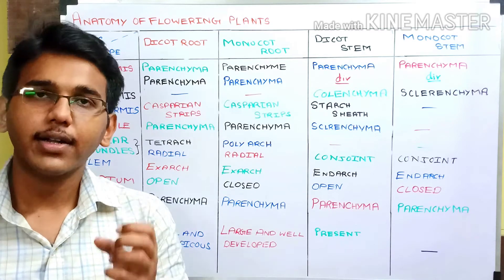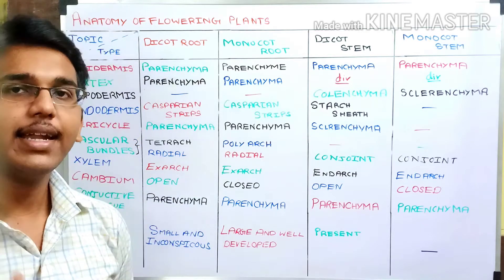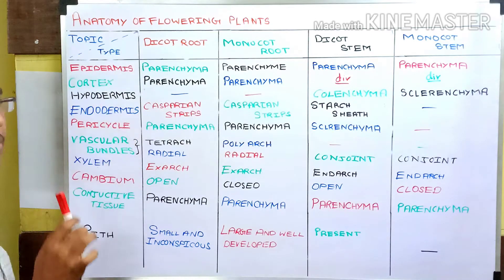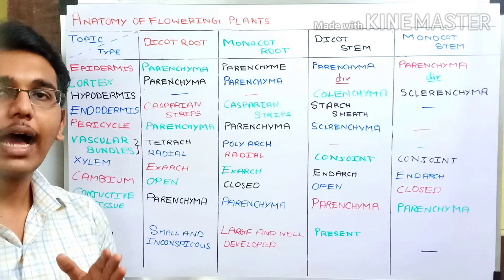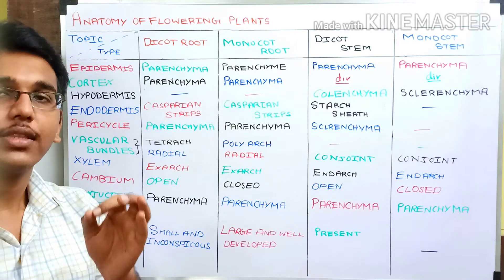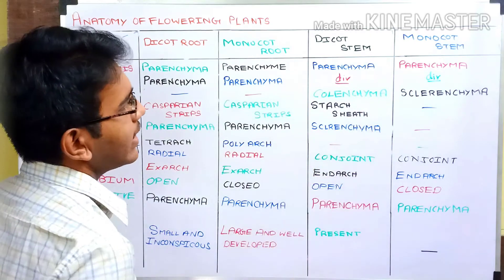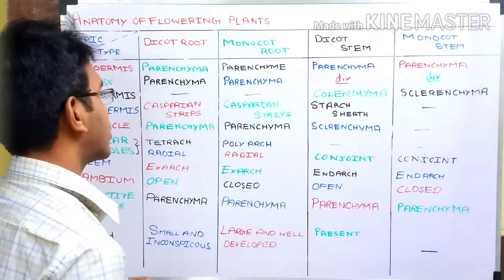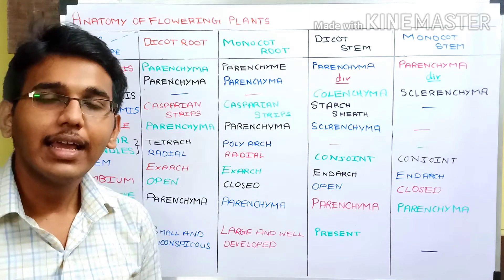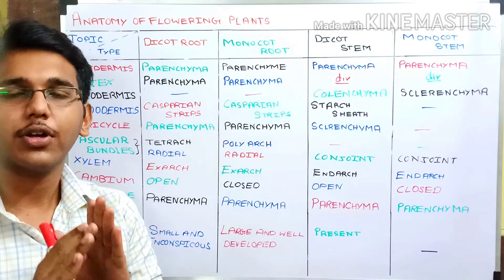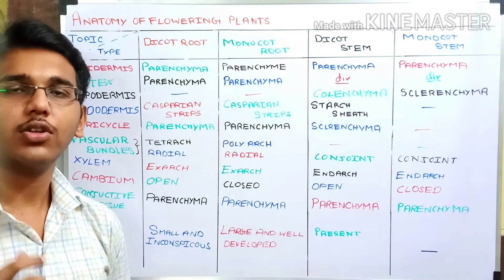The cortex is divided into three layers: the hypodermis, the endodermis, and the general cortex — the region between the hypodermis and endodermis. The hypodermis is absent in roots and present only in stems. In dicot stem it is made up of collenchymatous tissue, and in monocot stem it is made up of sclerenchymatous tissue. The general cortex in stems is made up of parenchymatous tissue, and in roots the entire cortex is made up of parenchymatous tissues.